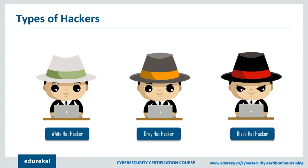A black hat hacker is out for money or thrill — it's really criminal activity. A gray hat hacker is somebody who may employ the tactics and techniques of a black hat hacker but with a white hat focus. In other words, they'll do things that may be malicious or destructive in nature, but the reason is to improve the security posture of an organization they're working with. There's actually a book called Gray Hat Hacking — a pretty good book that details a lot of the tactics, strategies, and techniques we'll be going over in subsequent lessons.